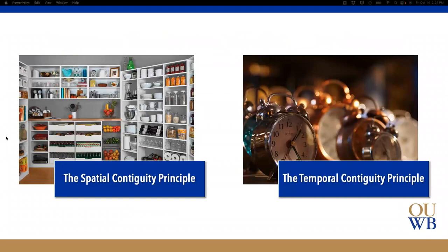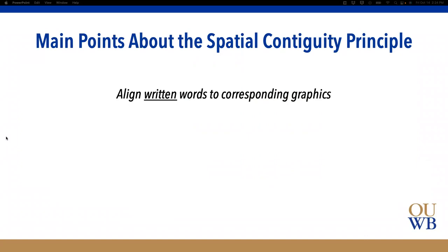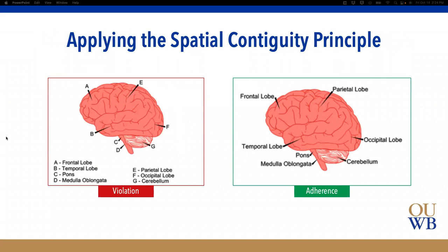Next is the contiguity principle, which has two subsets: the spatial contiguity principle and the temporal contiguity principle. The main point of spatial contiguity is that you want to align written words to corresponding graphics. Here we have two very similar images — in the example on the left, the principle is violated because the labels indicating different parts of the brain are physically separated from the brain image itself, requiring a lot more eye movement back and forth.